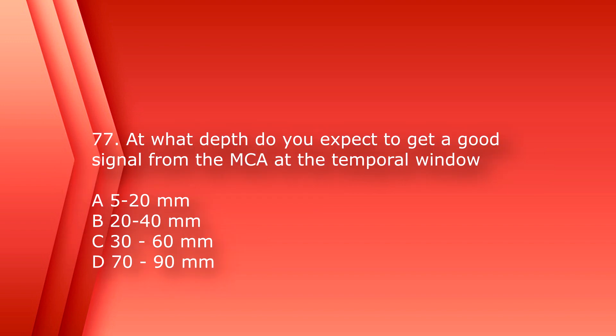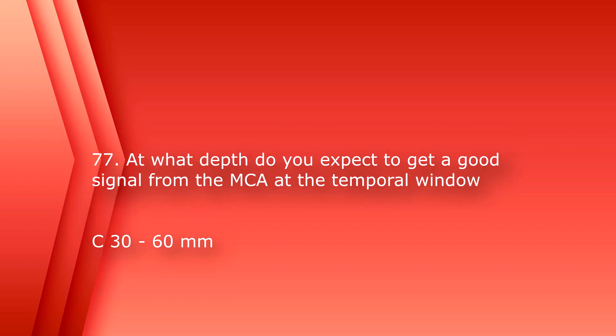Number 77: at what depth do you expect to get a good signal from the MCA at the temporal window? A. 5-20mm. B. 20-40mm. C. 30-60mm. Or D. 70-90mm. The answer is C. 30-60mm.